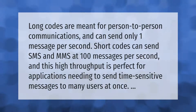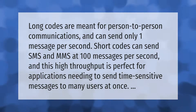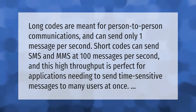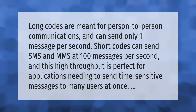Long codes are meant for person-to-person communications and can send only one message per second. Short codes can send SMS and MMS at 100 messages per second, and this high throughput is perfect for applications needing to send time-sensitive messages to many users at once.